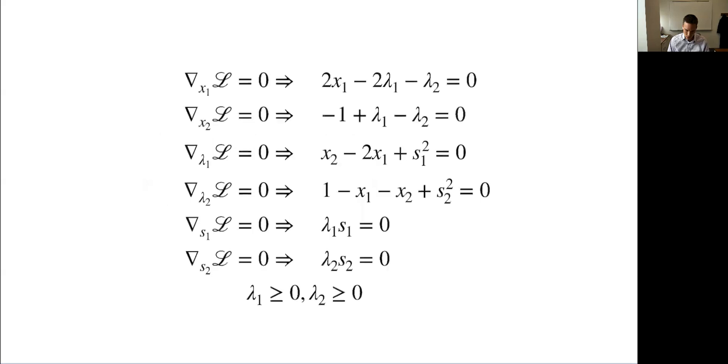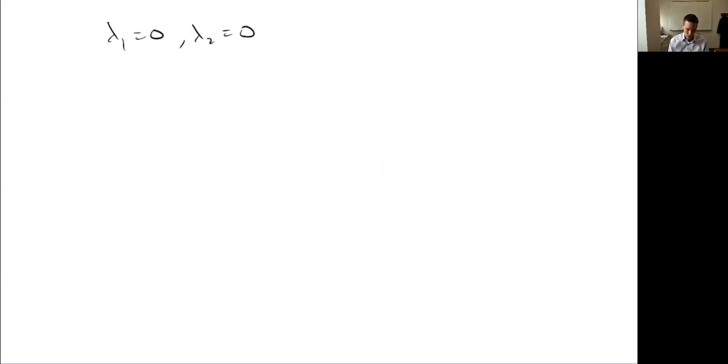So let's try the first one where they're both inactive. If lambda 1 equals 0 and lambda 2 equals 0, what happens is we can actually see it here, this equation here. Imagine both those are 0, 0. So this says minus 1 equals 0. Not true. So that can't be a solution.